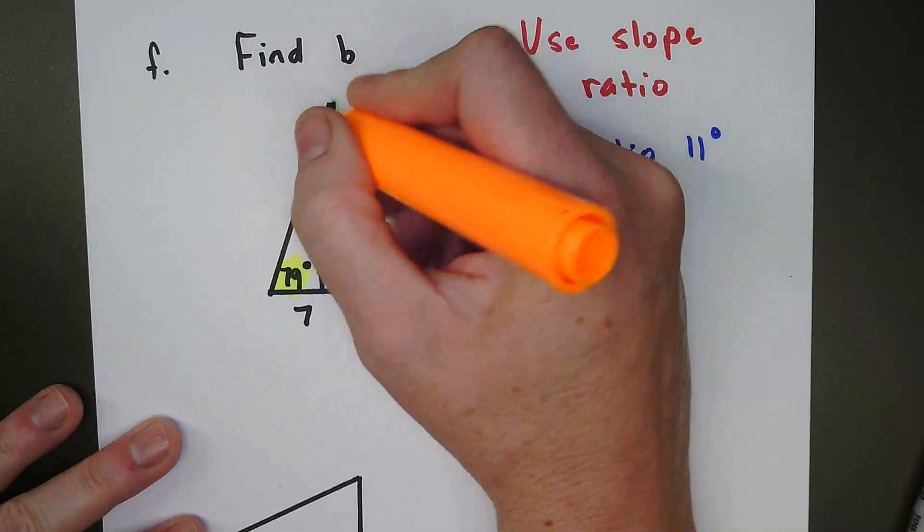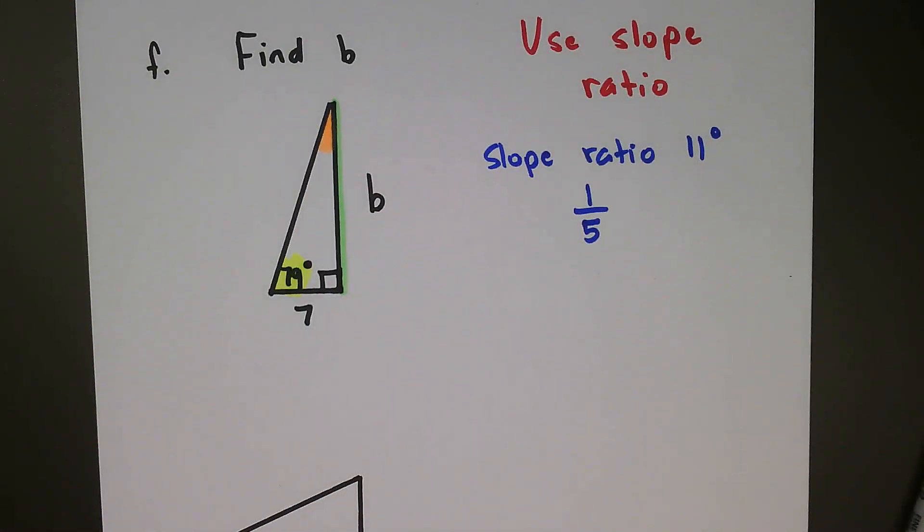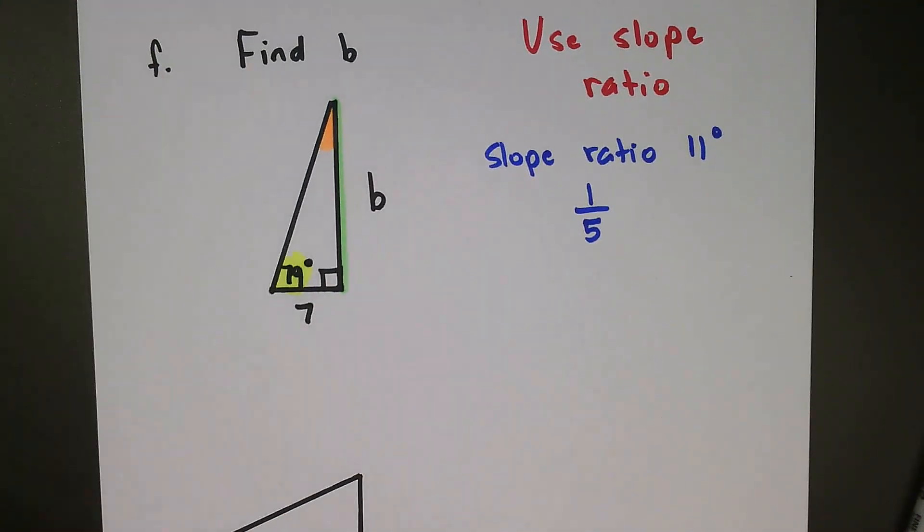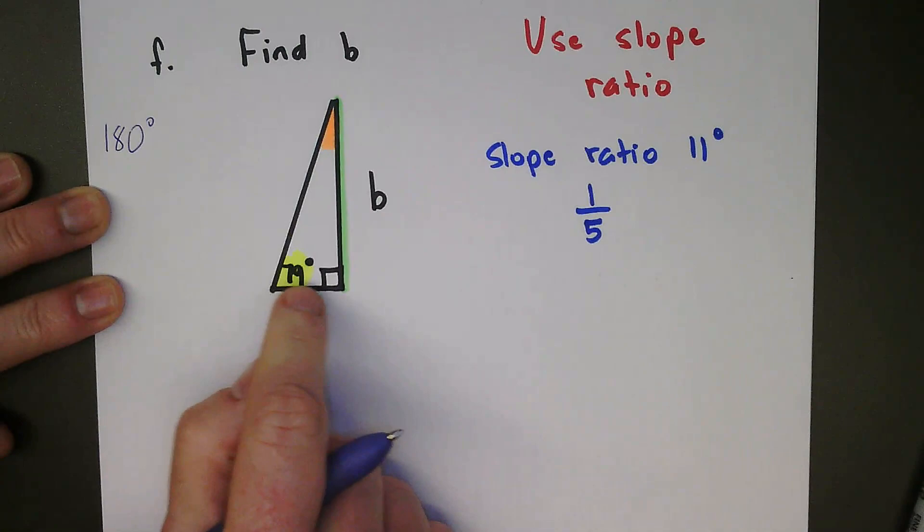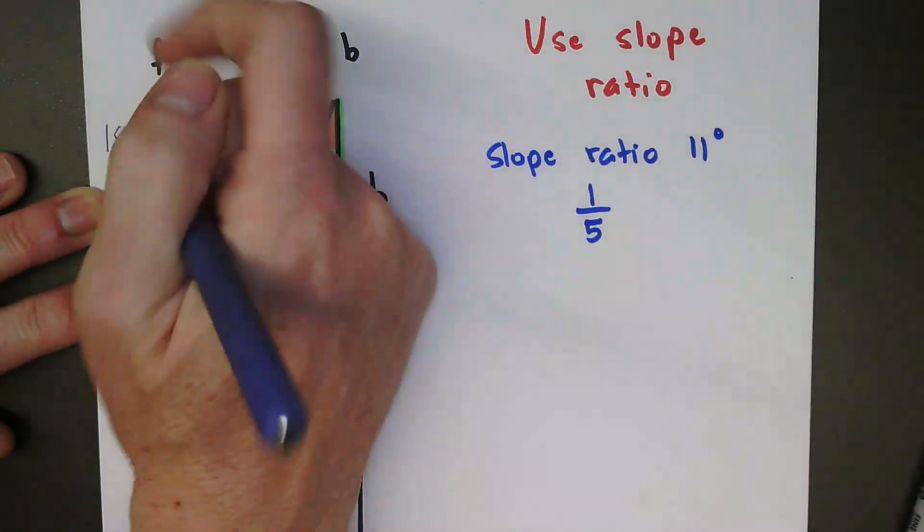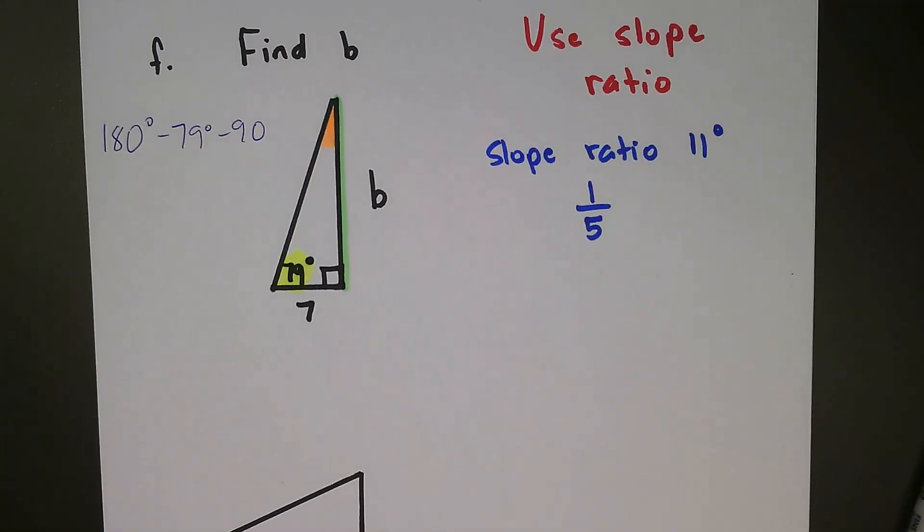But what we can do is sort of see what this angle is, and you've probably already deduced what it's going to be based on the knowledge that we're bringing to the table. But we can figure this out because all angles in a triangle need to add up to 180. So basically what we'll do is we'll take our 180 degrees, and then we'll just subtract off the 90, and we'll subtract off the 79. So minus 79, minus 90, and that's going to tell us what this angle is worth.